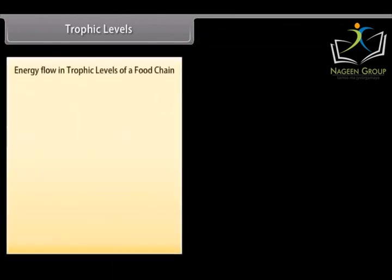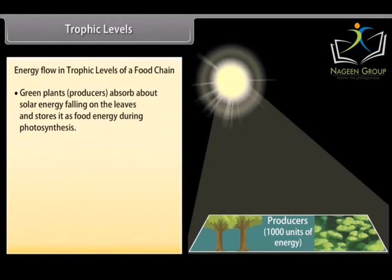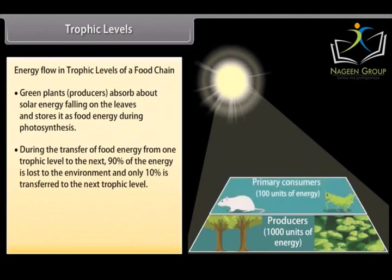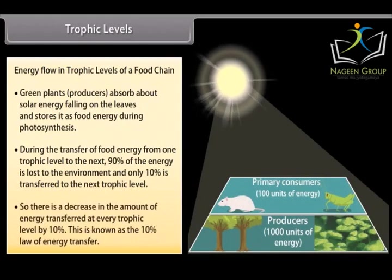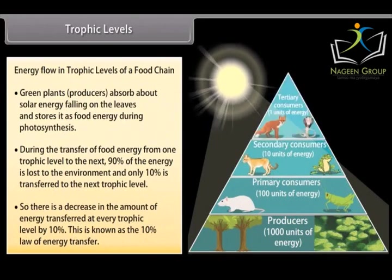Green plants (producers) absorb about 1% of solar energy falling on the leaves and store it. During the transfer of food energy from one trophic level to the next, 90% of the energy is lost to the environment and only 10% is transferred to the next trophic level. This decrease in the amount of food energy transferred at every trophic level by 10% is known as the 10% law of energy transfer.